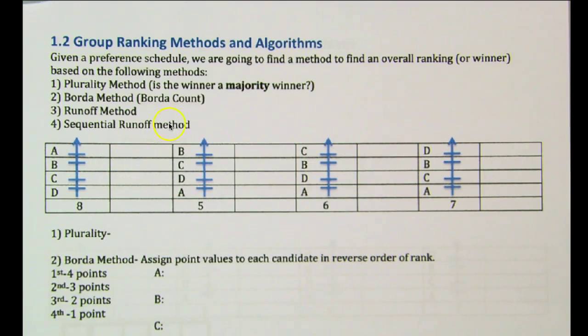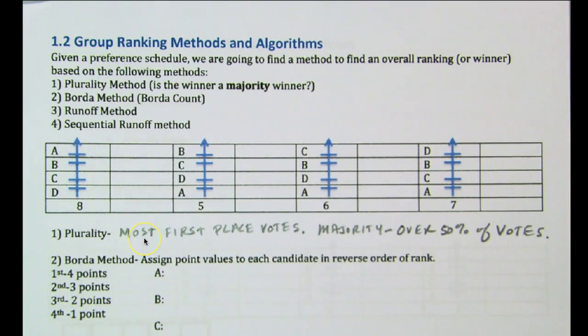So first of all, if we look at plurality method, what it is is when we have the most first place votes. Whoever has the most first place votes will win. And then also we might ask, is it a majority winner? If it's a majority winner, then it has over 50% of the votes. So if we look at this setup here, first of all, maybe we should talk about the preference rankings. What happens is that if I have four candidates, A, B, C, D, this means that A came out first in a selection from eight different people, B next, C next, and D after that. So D finished last for these eight people.